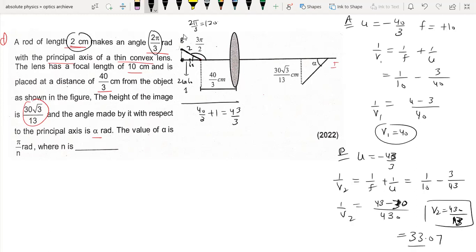That means this end is also on this side. Now we can find the distance. This is 430 by 13, this is 40. So X equals 40 minus 430 by 13, which is 90 by 13.